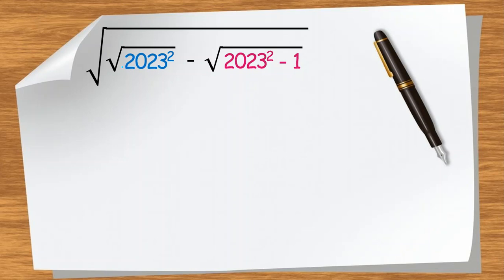We want to simplify the square root of 2023 minus the square root of 2023 squared minus 1. First, the square root of 2023 squared is just 2023, so let's focus on simplifying the inner expression.